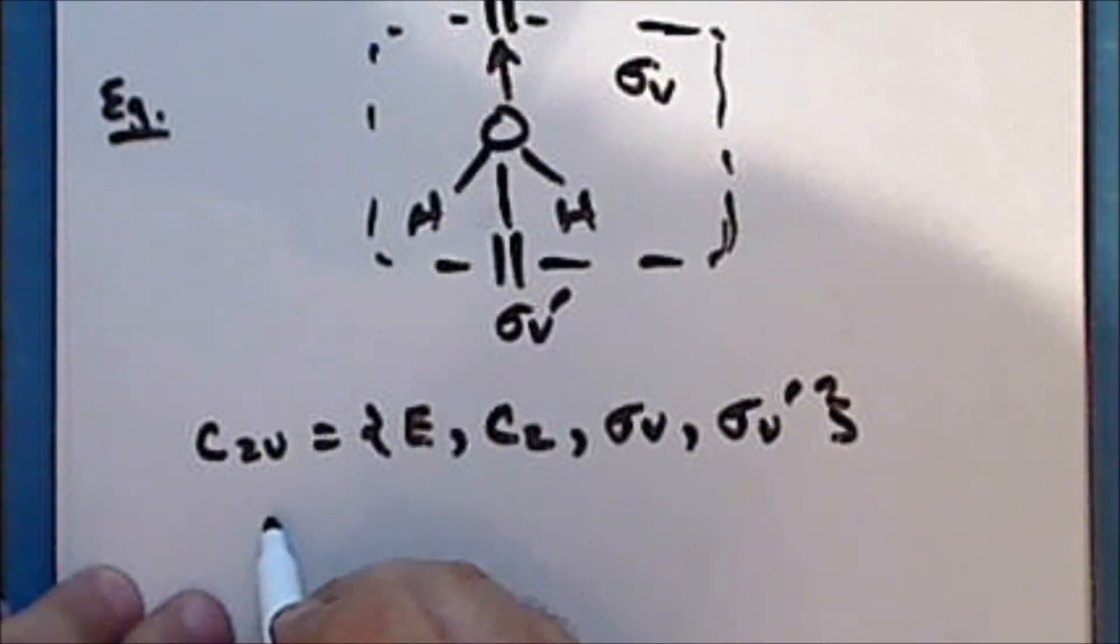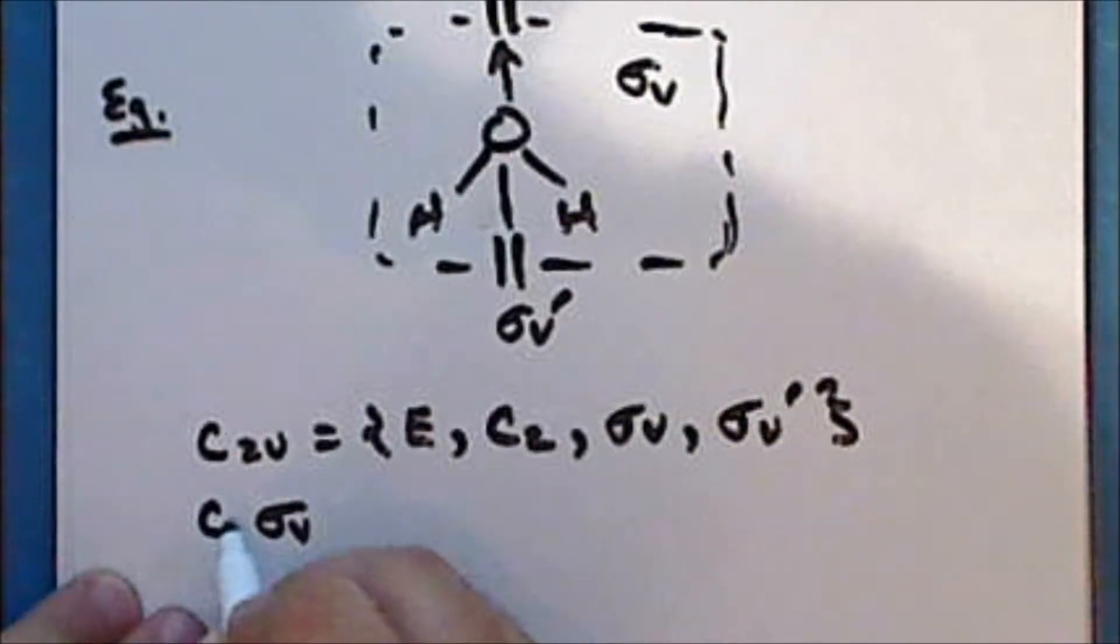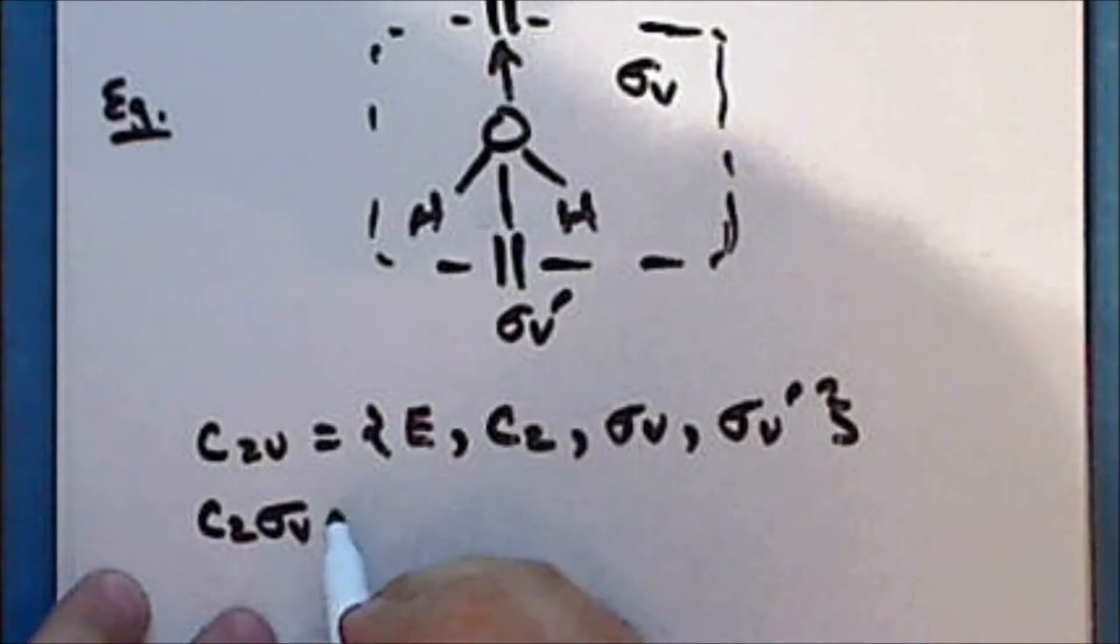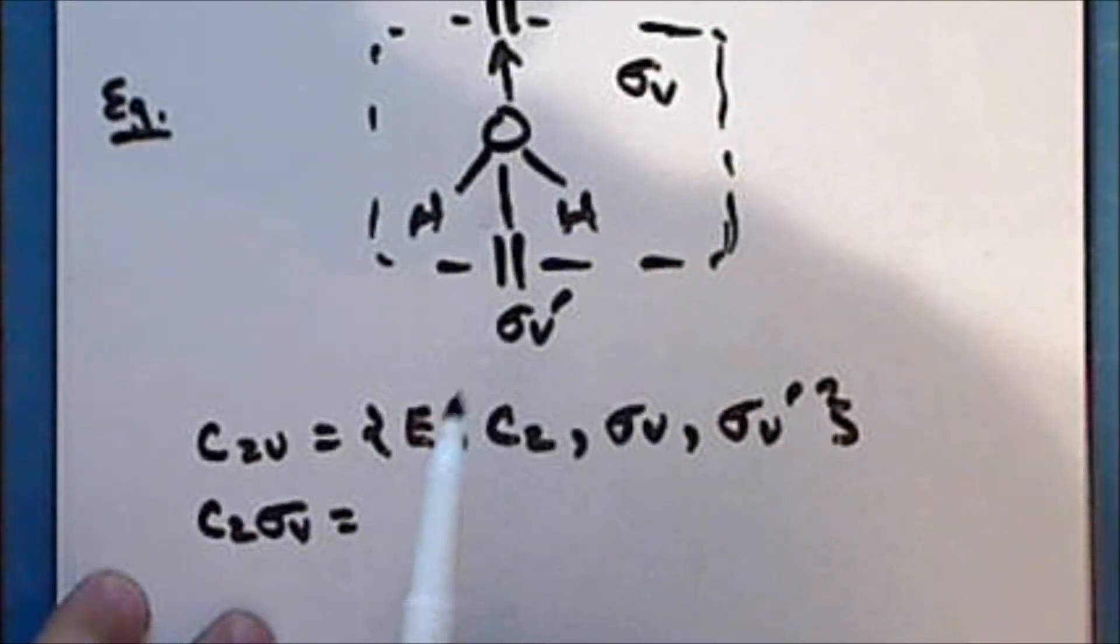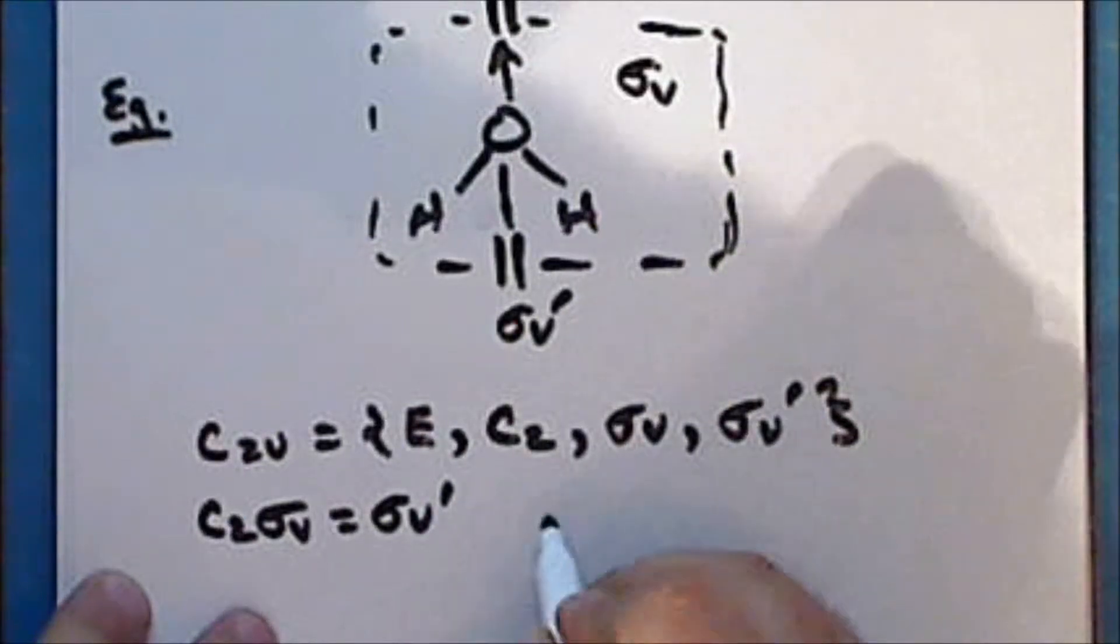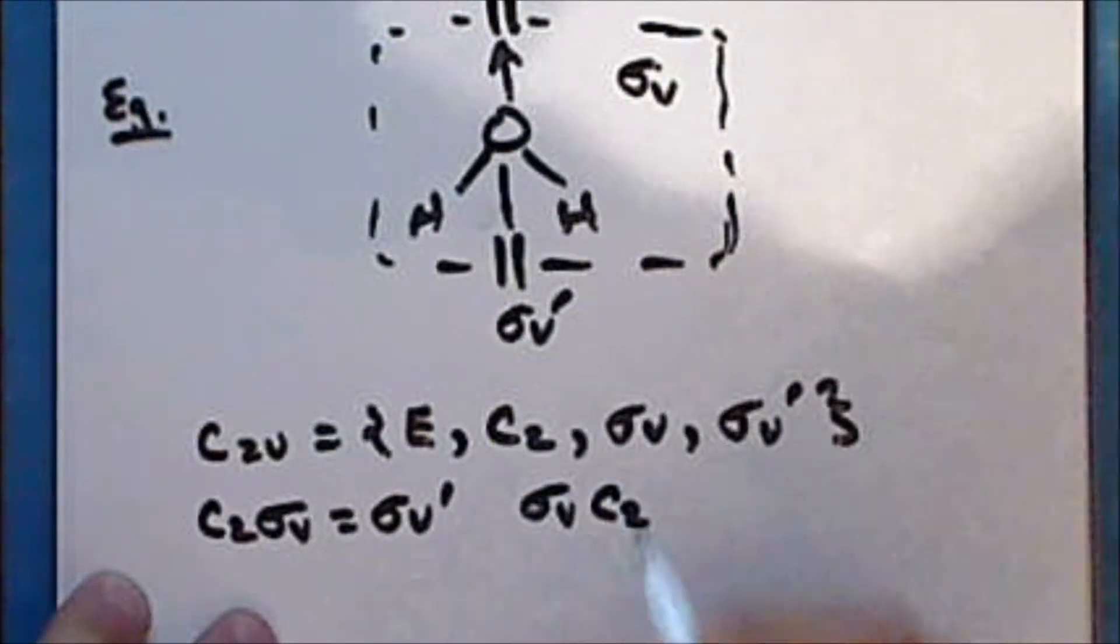So if we first perform sigma V and follow that by rotation by 180 degrees, then this is the same as reflection through the sigma V prime mirror plane. And if instead we first rotate by 180 degrees and then reflect through the sigma V plane, once again this is the same as reflection through the sigma V prime plane.